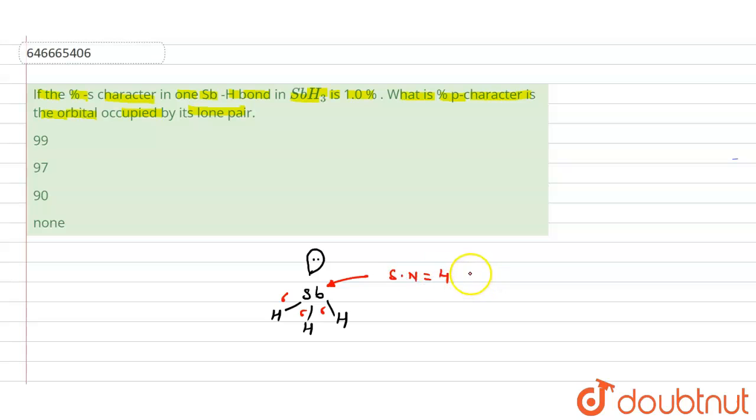So total percentage will be 100. Total percentage with s and p, including s and p, it will be 100. So one will be s character and remaining will be p character because one s and three p is involving. So one s, let's suppose this is s, so remaining three will be p.